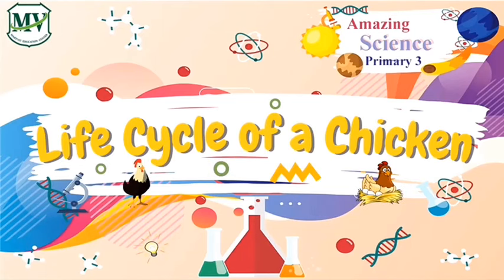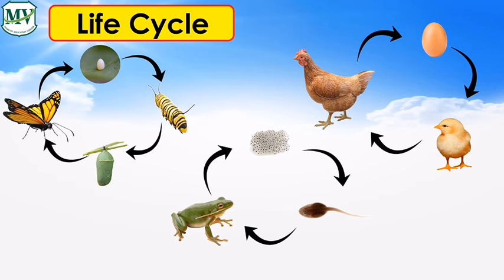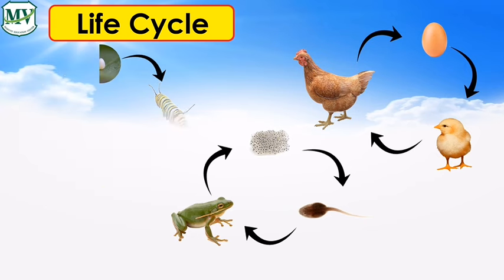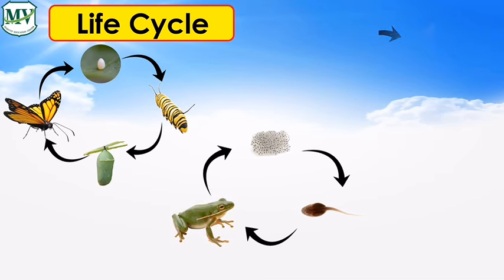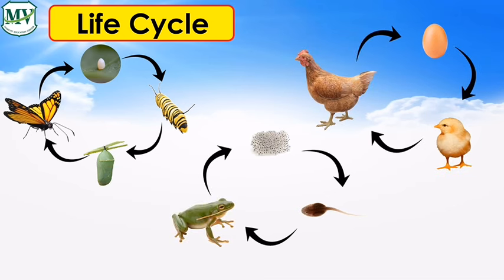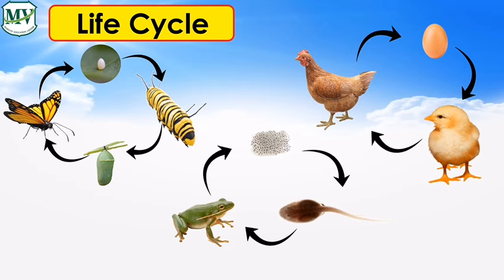Life Cycle of a Chicken. Different animals have different life cycles. A life cycle is all the stages that a living thing goes through as it grows, reproduces and dies. A new life cycle starts when the living thing produces young. Young are the babies of an animal.